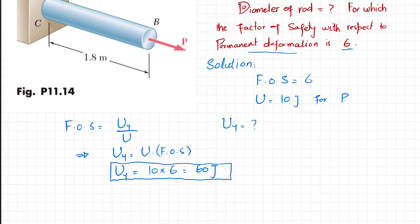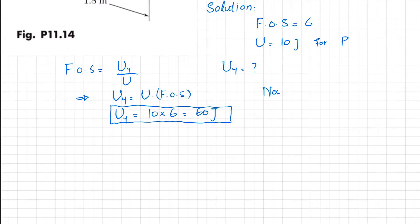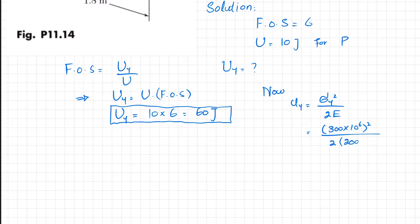Based on this value, we will find the diameter of the rod, since it is given that the factor of safety is 6 with respect to permanent deformation. We know that strain energy density till the point of yielding is equal to sigma yield squared divided by 2E. Sigma yield is 300×10⁶ Pa, E is 200×10⁹ Pa. When you calculate it, this gives a strain energy density of 225×10³ joule per cubic meter.